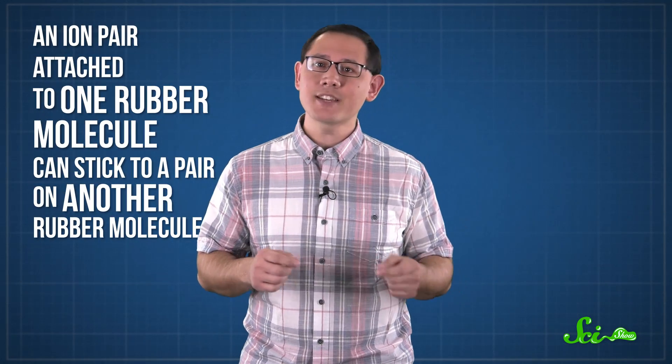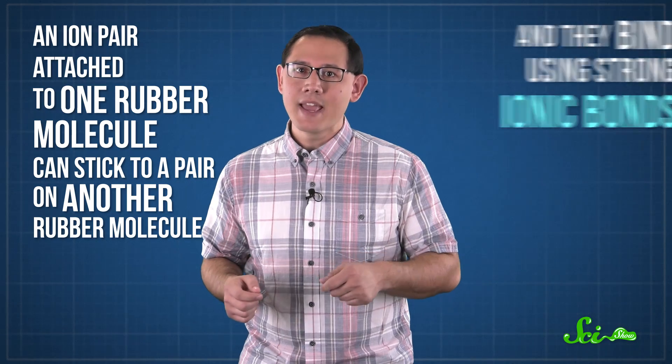And just like in salt, these pairs of ions tend to bond to other pairs to form big groups. That means that an ion pair attached to one rubber molecule can stick to a pair on another rubber molecule, and they bind using strong ionic bonds. These ionic bonds hold the rubber molecules together and strengthen the material, just like the sulfur bonds did.